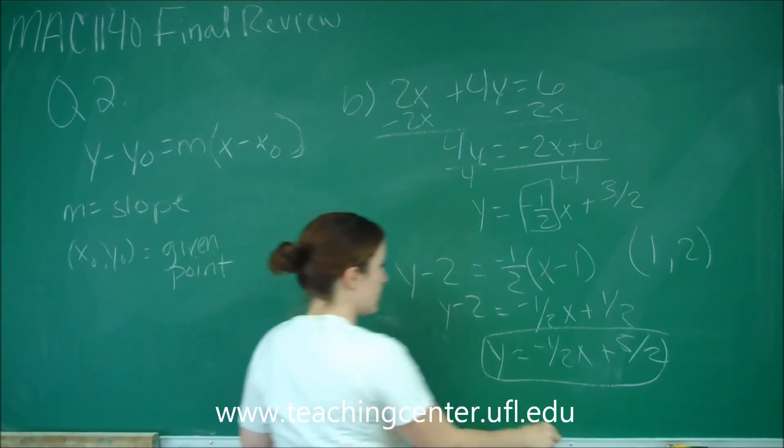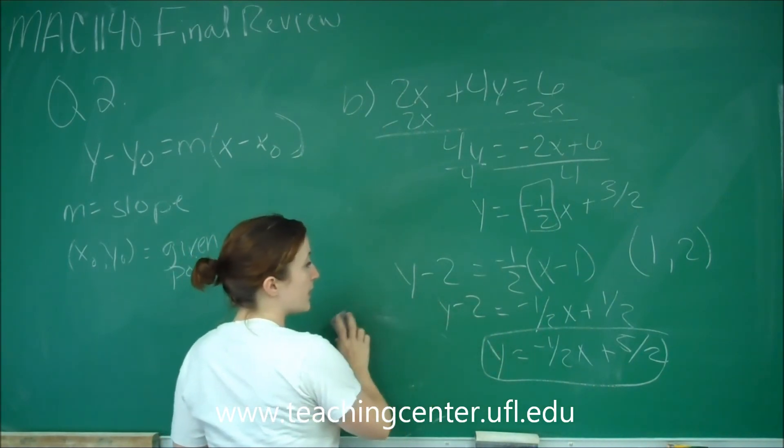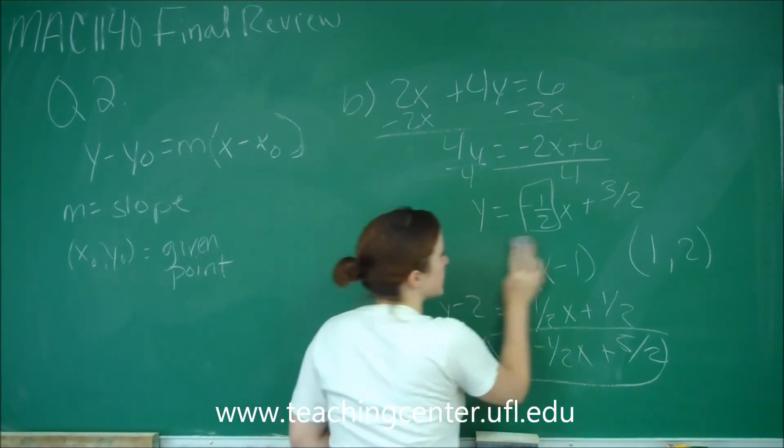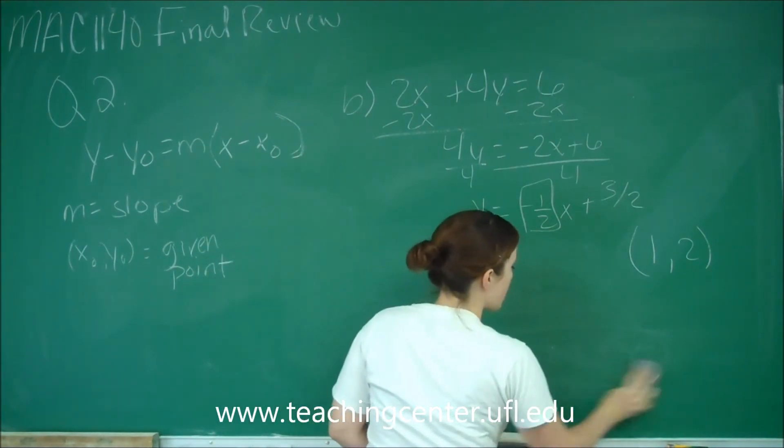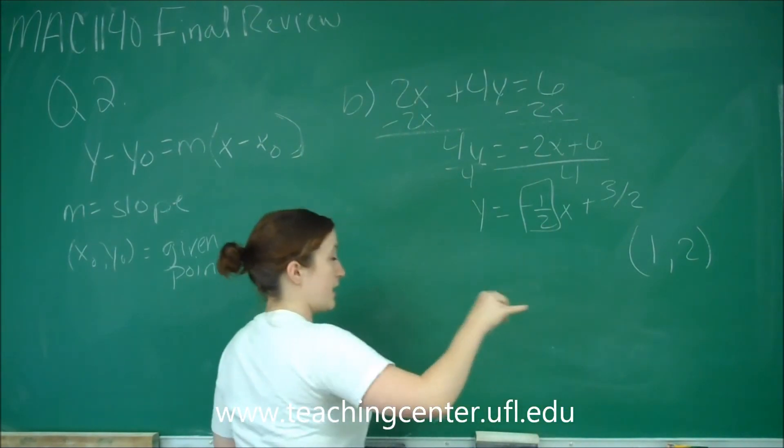Now it wants us to do it similarly with the same given point. This is if our line was parallel, but it wants us to do it if it was perpendicular. So if it was perpendicular, remember this slope would be negated and flipped.